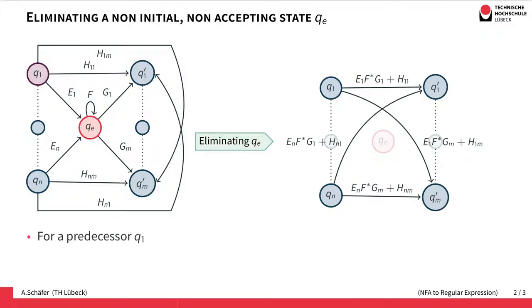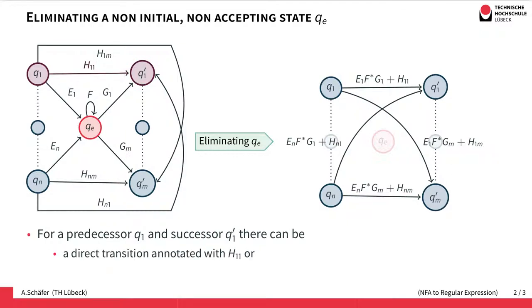We further assume there's a predecessor Q1 and a successor state Q1'. If we have these two, it's possible to go from Q1 to Q1' directly with a transition annotated by H11. It's also possible to go to Q1' via QE, because Q1 is a predecessor and Q1' is a successor.